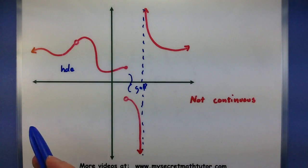So features like this, like holes, gaps, and vertical asymptotes, create a function that is not continuous.